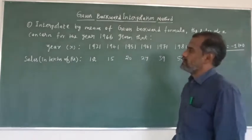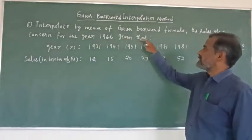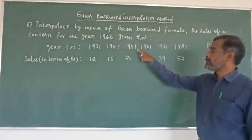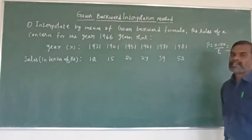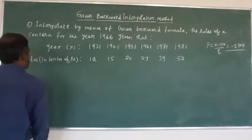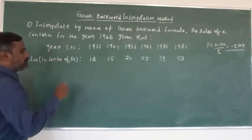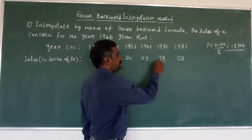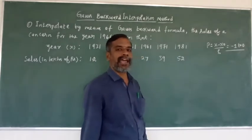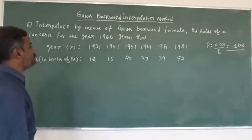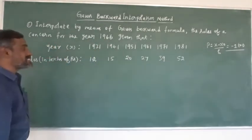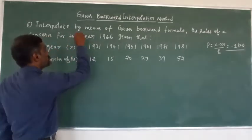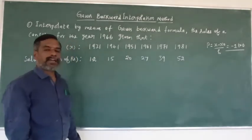For the sales of a concern, the given years in x are 1931, 1941, 1951, 1961, 1971, and 1981. The corresponding y values — sales in lakhs of rupees — are 12, 50, 20, 27, 39, and 52 lakhs. We need to find the sales in the year 1966 using the Gauss backward interpolation method. The question itself specifies using the Gauss backward interpolation formula.